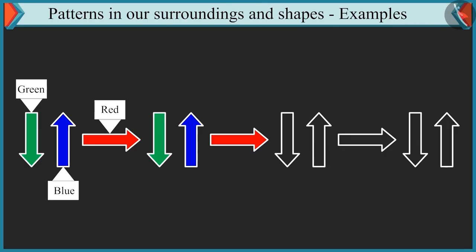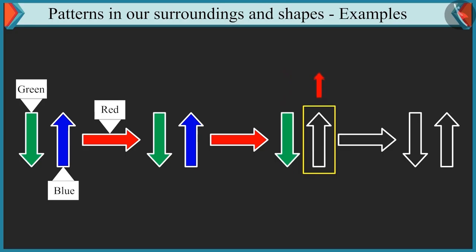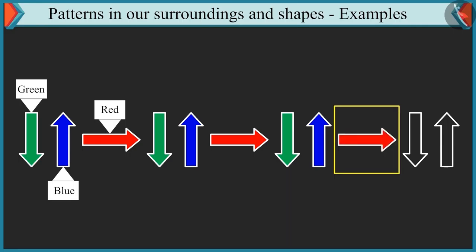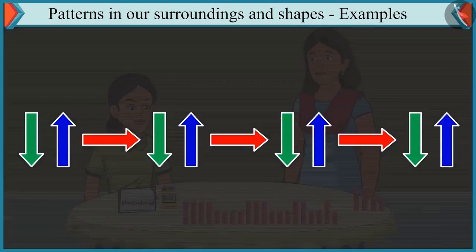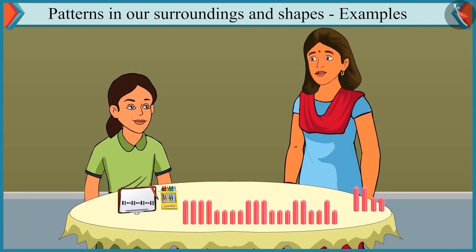Of these arrows, the first arrow is going downward so we will have to fill it with green color, and we will fill the arrow going upwards with blue color. Absolutely right, Chutki. Next, we will fill the sleeping arrow with red color. Then the downward arrow is filled with green color and the upward arrow with blue color. Wow! Well done, Chutki. Thank you, Mummy.